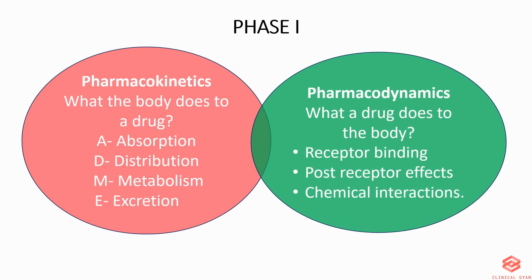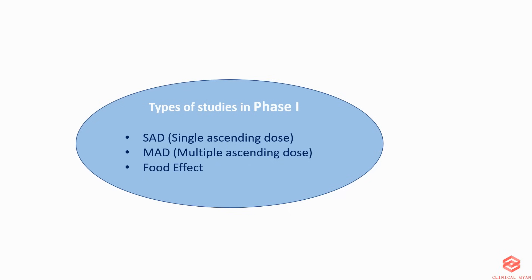Pharmacodynamics is described as what a drug does to the body. It involves receptor binding, post-receptor effects, and chemical interactions. There are several types of Phase 1 studies, but the common ones are SAD or Single Ascending Dose, MAD or Multiple Ascending Dose, and food effects.